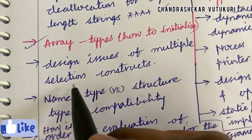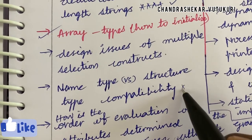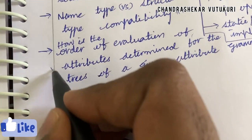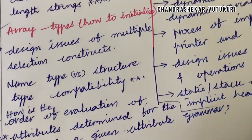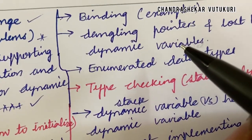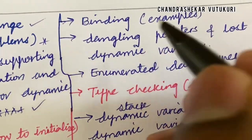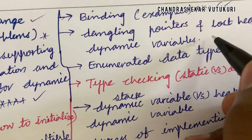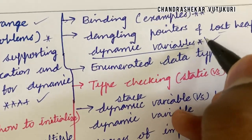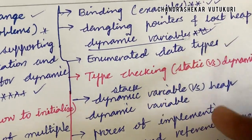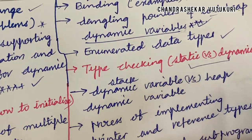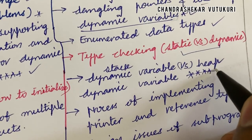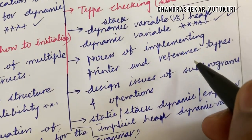Design issues of multiple selection constructs, and name-type versus structure-type compatibility with their differences, are important. How is the order of evaluation of attributes determined for the trees of a given attribute grammar? Dear students, whoever has taken this elective subject will find it a bit difficult to score good marks and cover these topics — work out each and every parameter I am highlighting. Binding and binding times with examples is a short question. Dangling pointers and lost heap-dynamic variables related to dynamic variables may be a short or long question. Enumerated data types, and type checking in static versus dynamic settings, are important. Stack-dynamic versus heap-dynamic variables and their differences are a top gunshot question. Process of implementing pointer and reference types, and design issues of subprograms and operations, are also important. Static, stack-dynamic, explicit, and heap-dynamic variables — explain these terms.